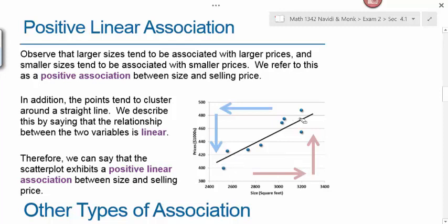If y increases as x increases, then we say that we have a positive correlation. If you had a line that increased from left to right, we said that had a positive slope. If our data would have been such that the line decreased, that would have been a negative linear correlation. The points tend to cluster about this straight line, so the relationship between the two variables is linear.